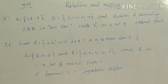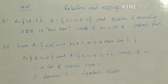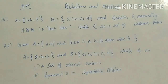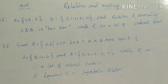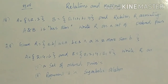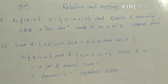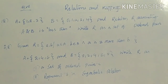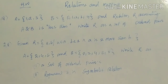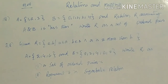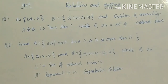This is your homework from Relations and Mapping. Question 1: A = {1, 2, 3} and B = {0, 1, 2, 3, 4}. The relation R associates A and B by 'less than'. Write R as a set of ordered pairs. Question 2: Given relation R = {(a, b): a belongs to set A, b belongs to set B, and a is 2 more than b}. Set A = {2, 4, 6} and set B = {0, 2, 4, 6, 8}. Write R as a set of ordered pairs, represent it in symbolic relation, and draw all relationship diagrams.